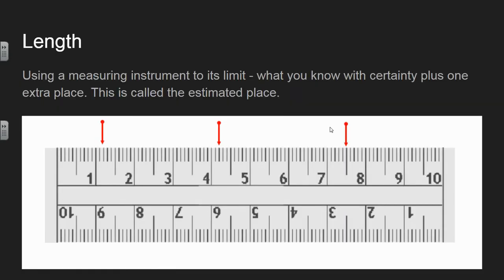In chemistry class, we use a lot of measurements and being able to take good accurate measurements is very important. What we need to know how to do is use a measuring tool to its limits. Basically, we'll measure it as accurately as possible.